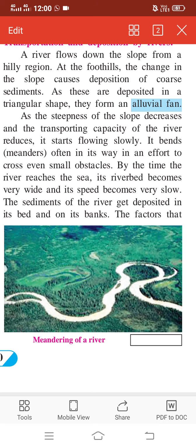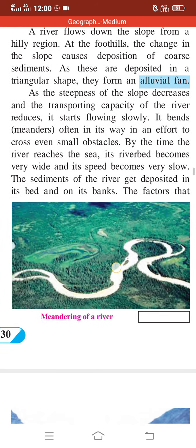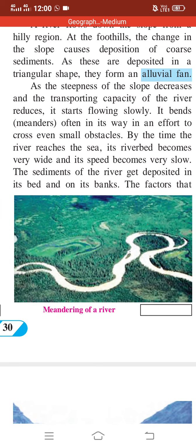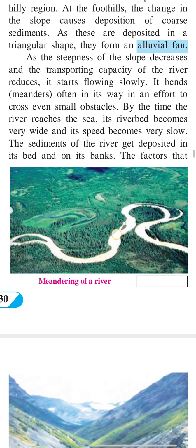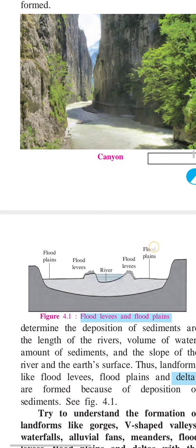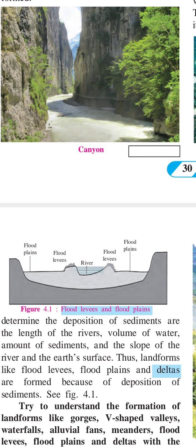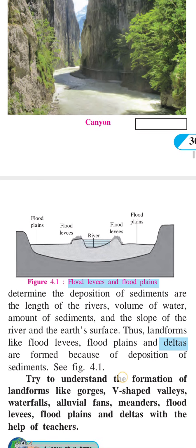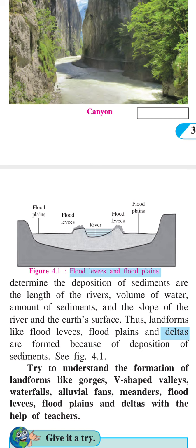In its effort to cross small obstacles, and by the time the river reaches the sea, its river bed becomes very wide and the speed becomes very slow. The sediments start to deposit on the bed and on the banks. The amount of sediments deposited depends on the slope and the river's volume of water, thus forming landforms such as flood plains and deltas.